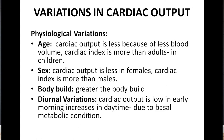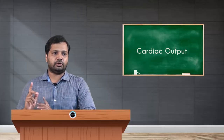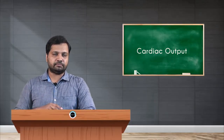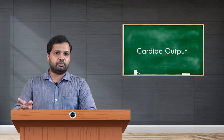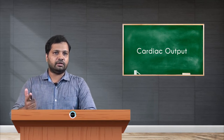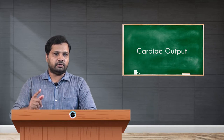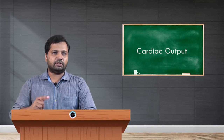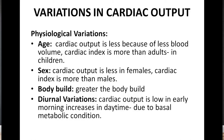The second physiological variation is sex. In females, cardiac output is less because the blood volume is lower compared to males. However, the cardiac index — the amount of blood pumped per minute per body surface area — is higher in females compared to males.